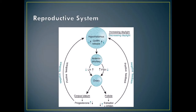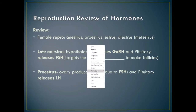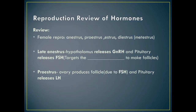In the female, the reproductive cycle — sometimes called estrus — starts with proestrus, then estrus, then diestrus or metestrus, and back to anestrus. During late anestrus, the hypothalamus releases gonadotropin-releasing hormone and the pituitary releases FSH.